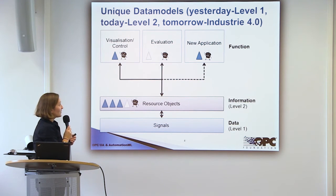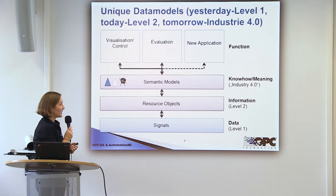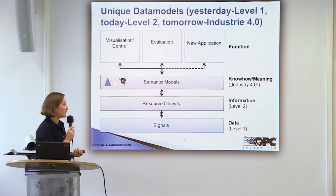The effect is that we have less configuration effort in each of these applications and that we have a lot of information already bundled at this information level. But the future is Industry 4.0, where we have semantic models. This means that we do not only transport the communication signals but also the semantics with them, so that each application can be connected and the semantic meaning of all objects is already included in this semantic model.